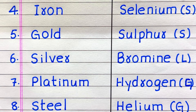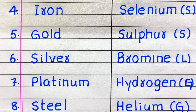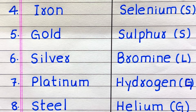Fourth example of a non-metal is selenium. Fifth, sulfur. Sixth, bromine. Seventh, hydrogen. Eighth, helium.